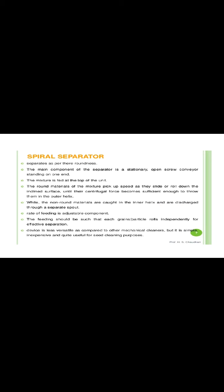The spiral separator performs separation on the basis of round shape. The main component of this separator is a stationary open screw conveyor standing on one end. The mixture is fed at the top of the unit. The round materials in the mixture pick up speed as they slide or roll down the inclined surface until their centrifugal force becomes sufficient to throw them into the outer helix. Non-round materials are caught in the inner helix and discharged through a separate outlet. The rate of feeding is adjustable. The device is less versatile compared to other mechanical cleaners, but it is simple, inexpensive, and quite useful for seed cleaning purposes.